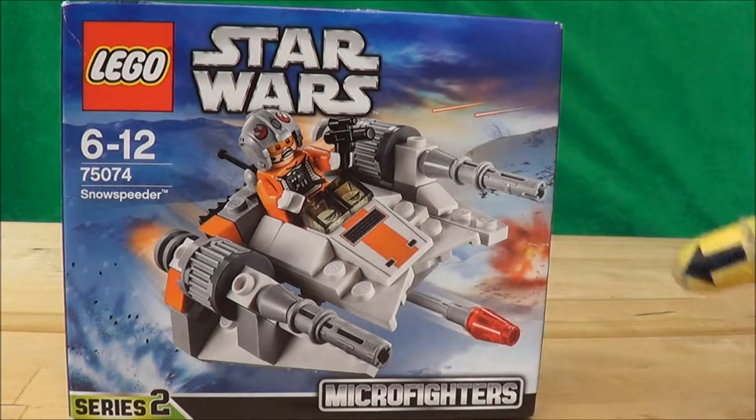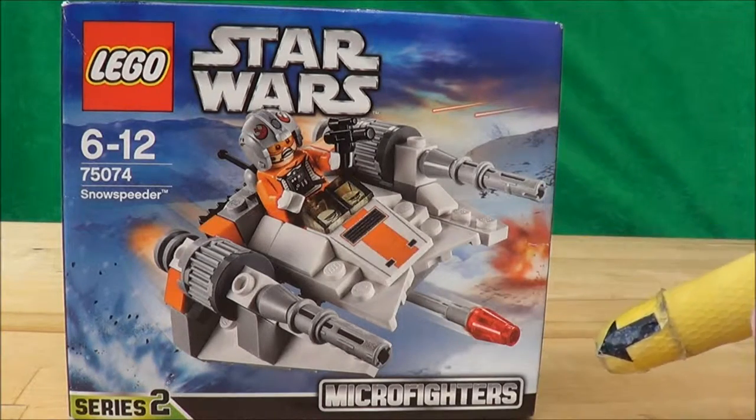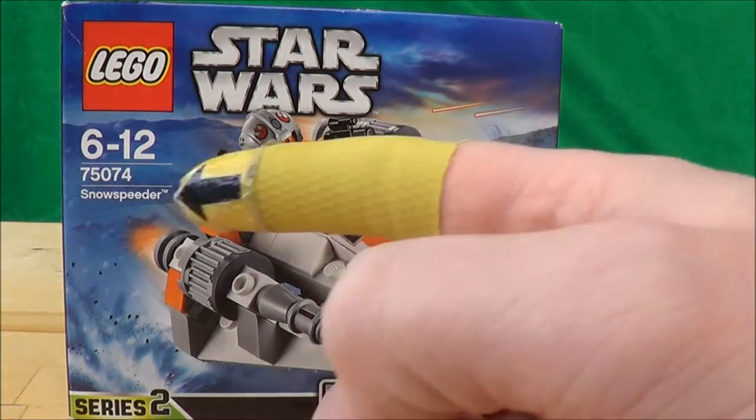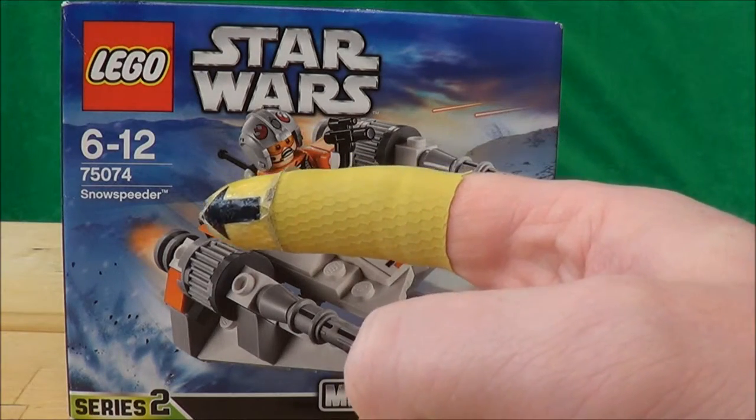Hello and today I'll be taking a look at the Lego Star Wars Micro Fighters Series 2. This is the Snow Speeder and it's set 75074.